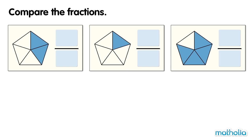Compare the fractions. All of the shapes are divided into five equal parts. In this shape, two parts are shaded. Two fifths are shaded.